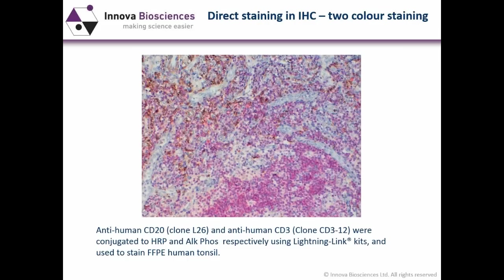On the next slide, this is simple direct two-color staining of a human tonsil. The CD20 clone L26 is conjugated to HRP, showing brown-stained B-cells especially towards the top and left of the section. Combined with a second antibody specific for T-cell marker CD3, conjugated to alkaline phosphatase using a Lightning-Link kit, both were incubated simultaneously on the tissue and visualized with their appropriate substrates. B-cells and T-cells are present in different areas of this tissue, exactly as expected — demonstrating how direct staining makes two-color immunohistology very simple.